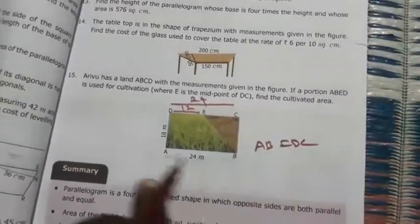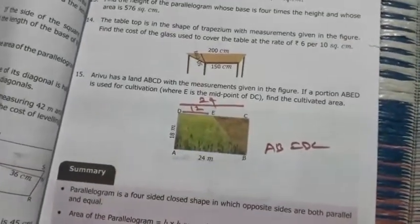Now we get our parallel sides. What is that? Parallel sides length: AB is 24, DE is 12. So take, find that area.